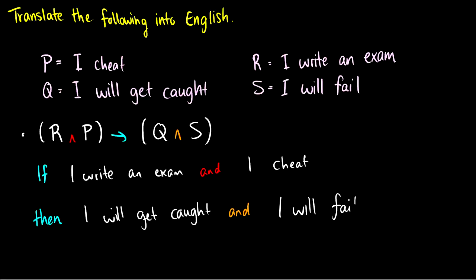So this well-formed formula, given the key above, translates into if I write an exam and I cheat, then I will get caught and I will fail. And we can kind of see the groupings here. So we can see that R and P are a group together and Q and S is a group together. So if R and P, then Q and S. And all I did was translate this well-formed formula into English, given the keys above.